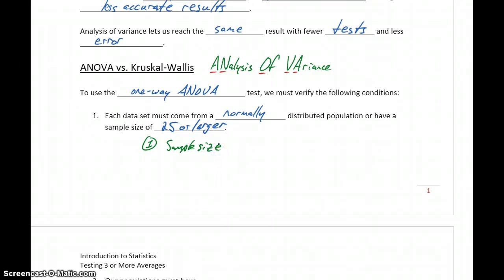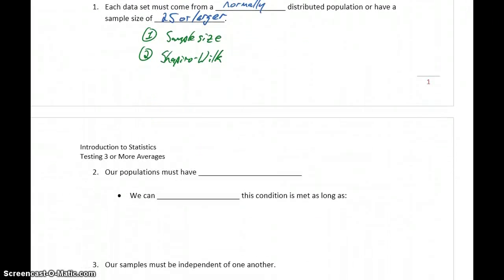If your data set's large enough, it's very easy to verify that condition. If your data set's too small, then you'll use the Shapiro-Wilk test to assess normality. We need to have data sets that are normally distributed, or to have large enough samples.